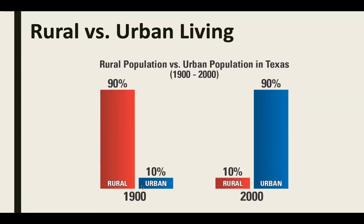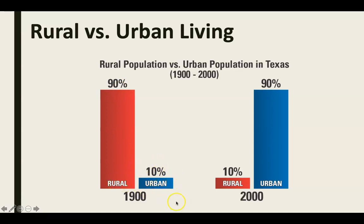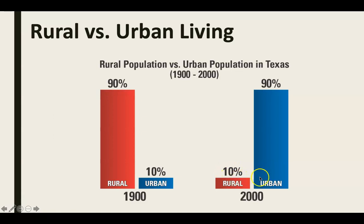In 1900, about 90% of the Texas population lived in the country and only about 10% lived in cities. By the year 2000, it had flip-flopped: 90% of the people in Texas live in urban areas and only 10% live out in the country.